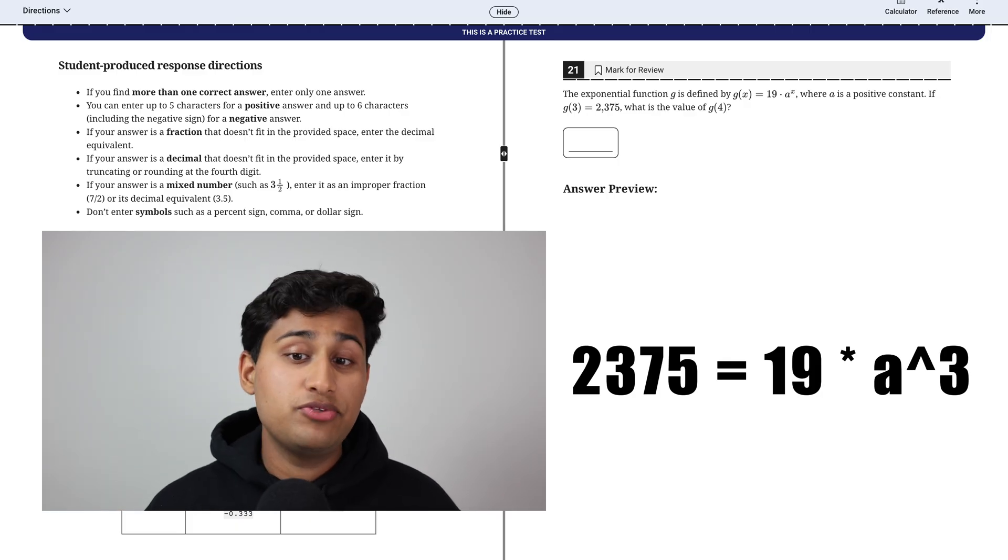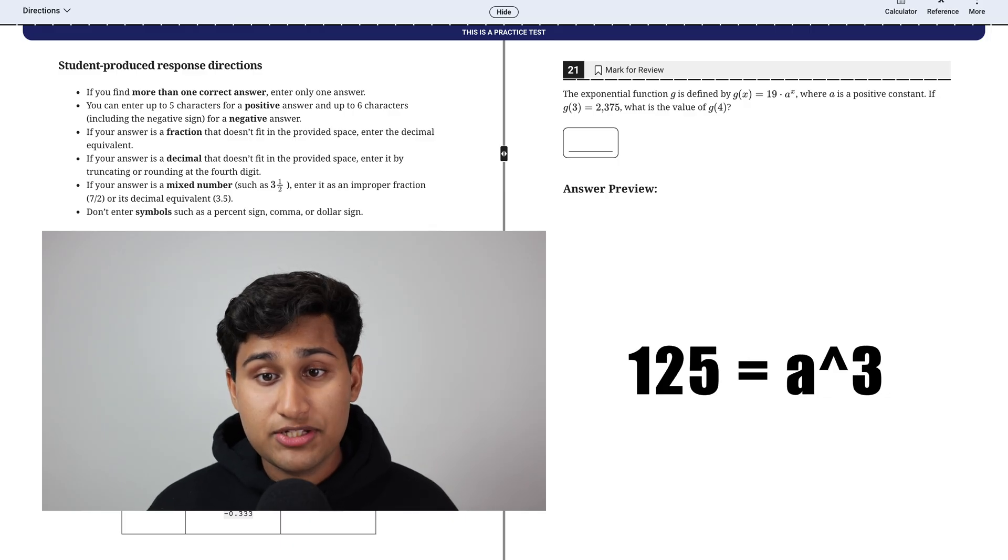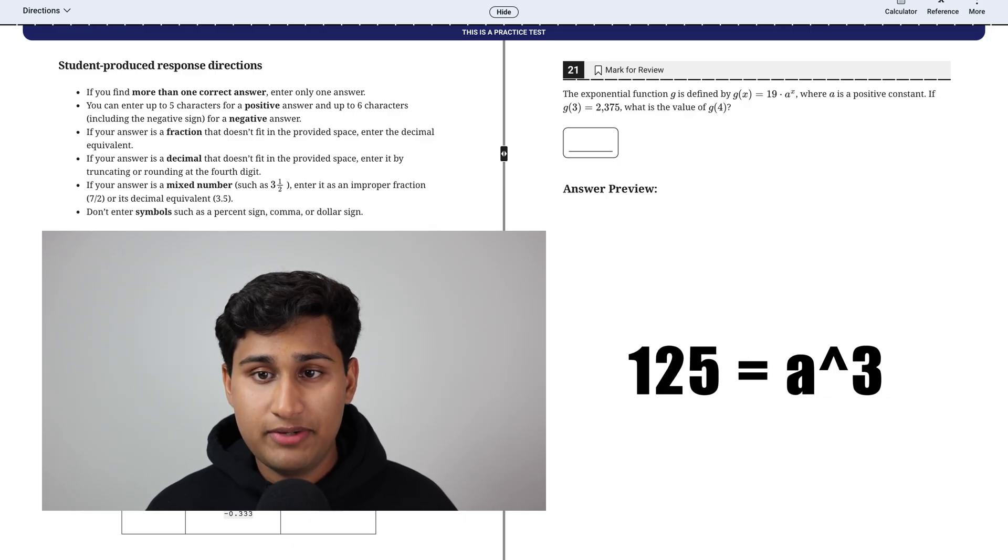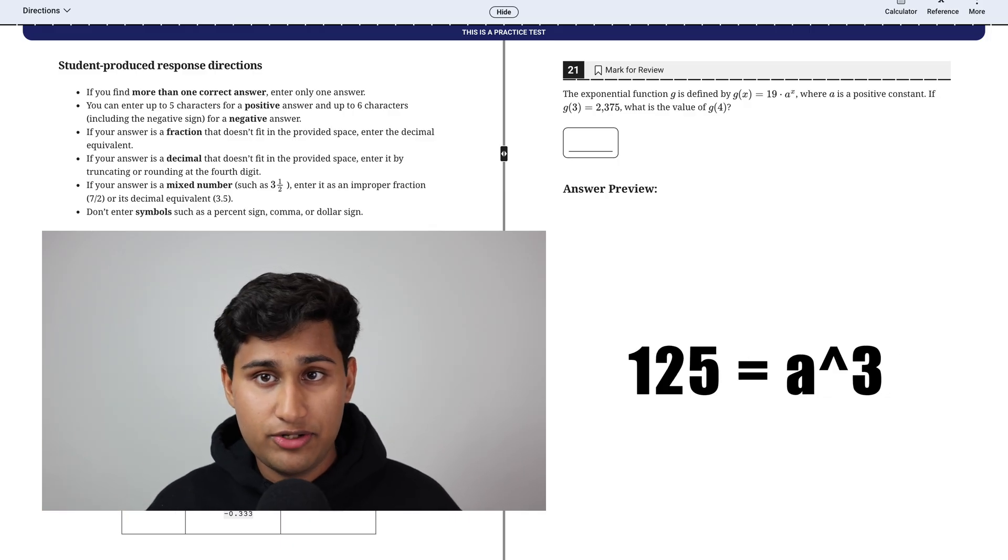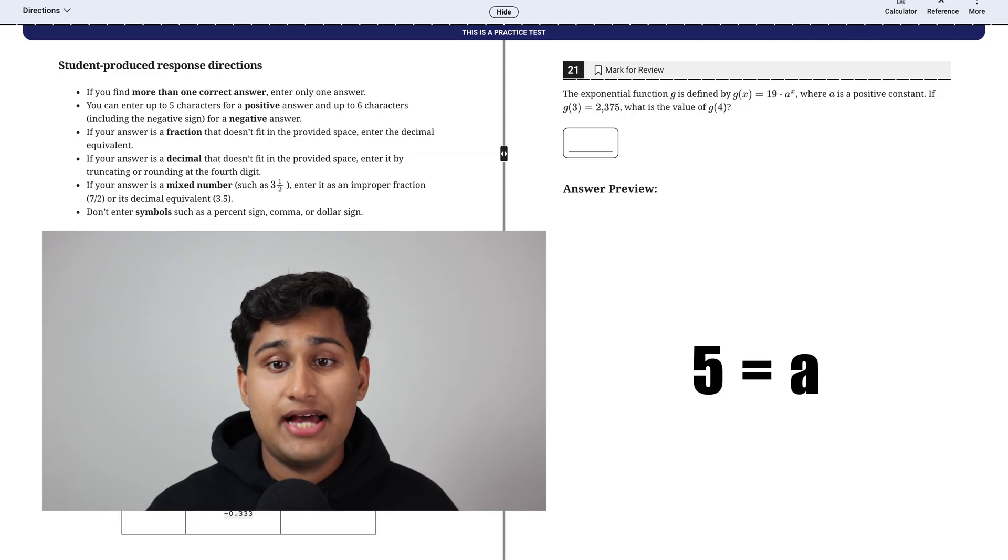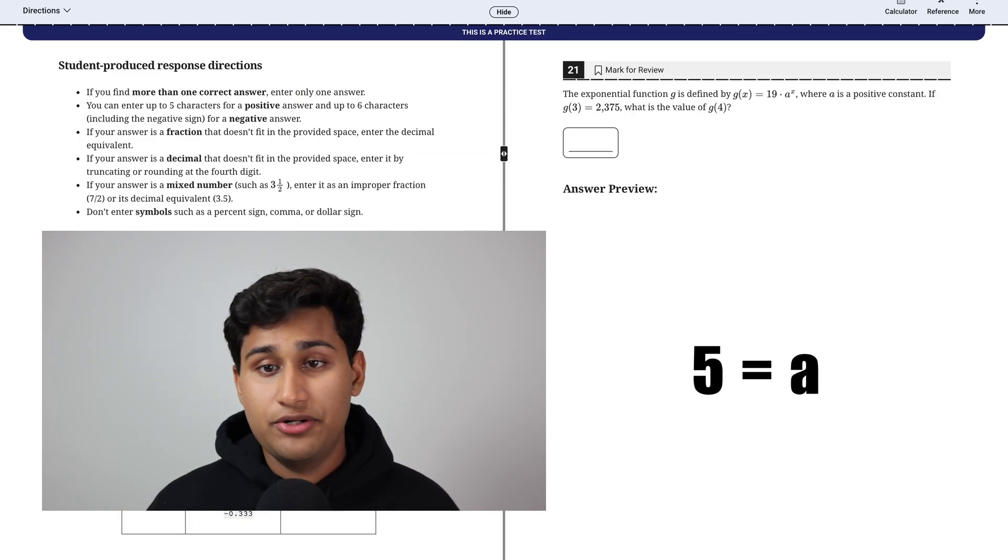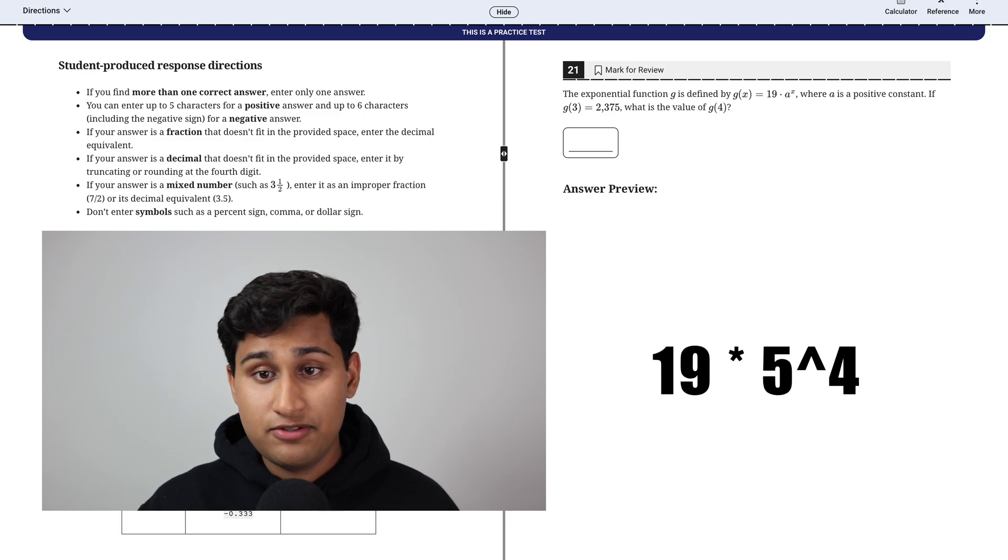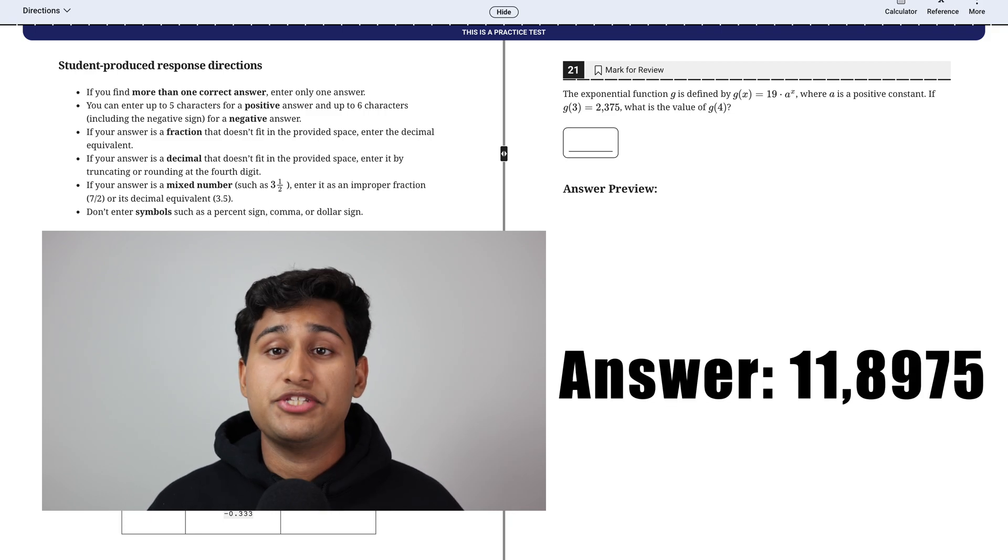So we're going to set it up as 2,375 equals 19 times A to the three because three is X. So then we're going to divide 2,375 by 19. That gives us the cube root of 125 because it's A to the third equals 125. Take the cube root of both sides. You get A is five. So it's asking what is the value of G of four? Then you're literally just going to do 19 times five to the four, and that gives you 11,875. And that's your answer.